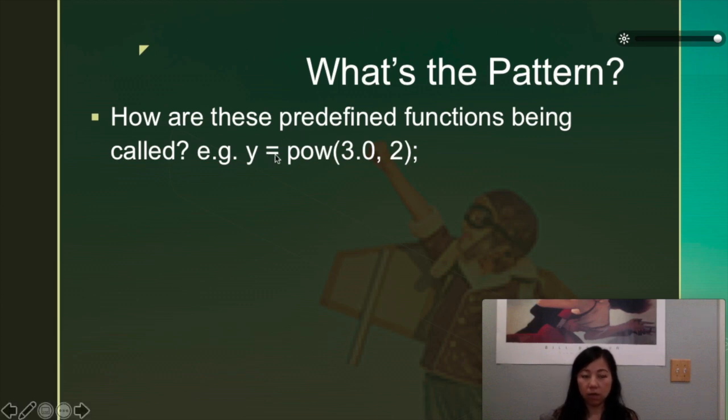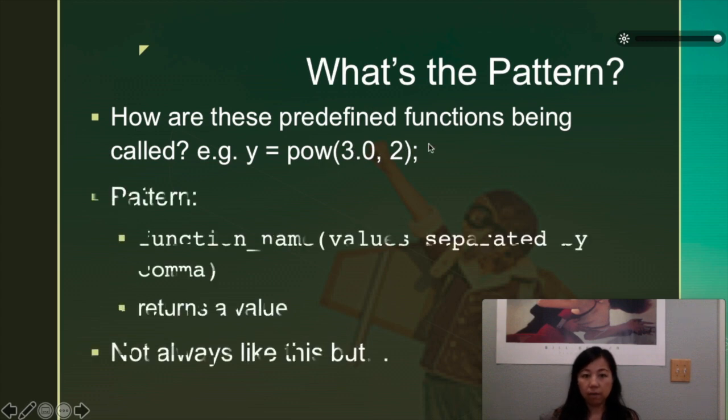For example, y equals power 3.0 to the power 2. So what's the pattern there? The pattern is that when we call the function, we have the function name, p-o-w, we have the values separated by commas, and then it returns a value. But it's not always like that, but a lot of them are like that.